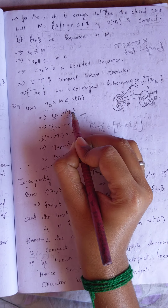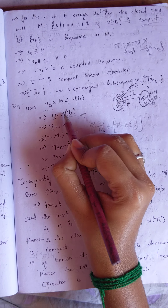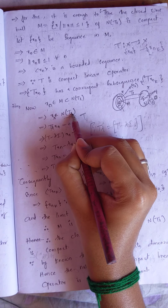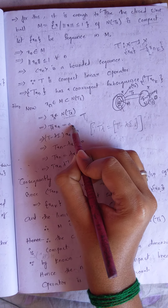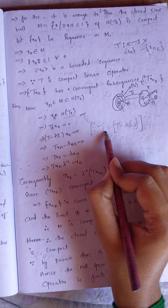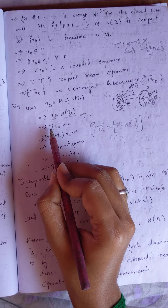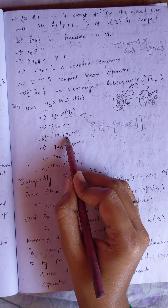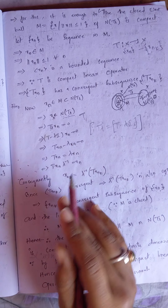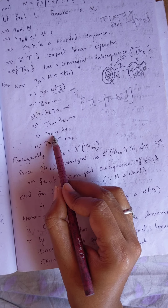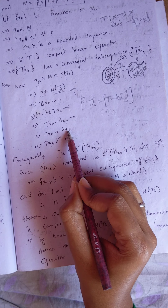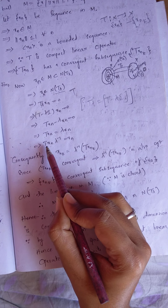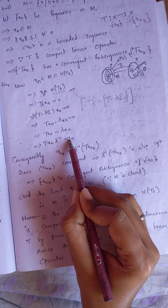T_lambda(x_n) is equal to 0. By definition of T_lambda, that is T minus lambda I, we have (T minus lambda I)(x_n) = 0, which gives T(x_n) = lambda times x_n. Moving lambda to the other side, x_n = (1/lambda) T(x_n), equivalently x_n = lambda inverse times T(x_n).